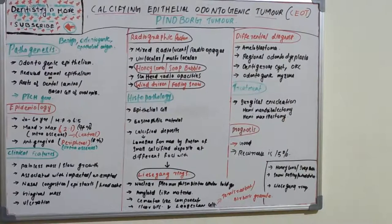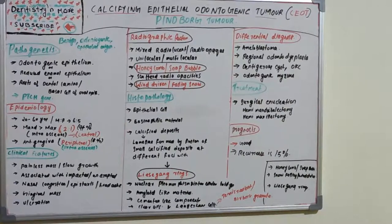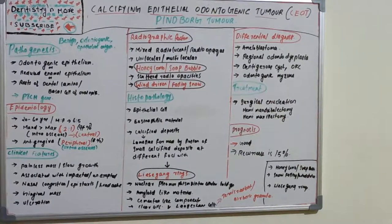Langerhans cells are also reported in some cases — not in every case, but they have been documented. Clear cells and Langerhans cells are seen. These are notable histopathological features of CEOT.